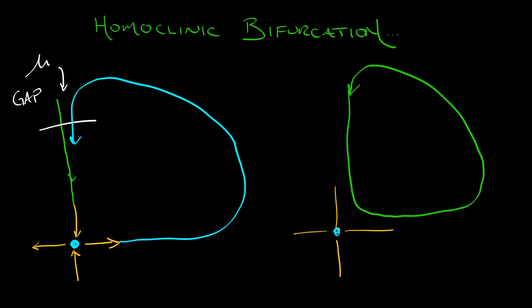As you reduce mu, then this stable limit cycle gets bigger and bigger and bigger and closer and closer to being a homoclinic orbit. Its period getting longer and longer and longer until when mu equals zero, you hit that exactly, and you have a homoclinic orbit. You no longer have a limit cycle. And then as mu passes through zero, you have nothing. You have no limit cycle. You have no homoclinic orbit.